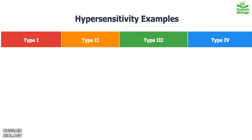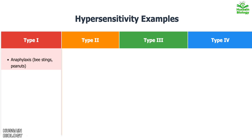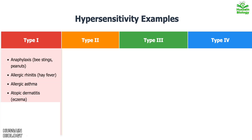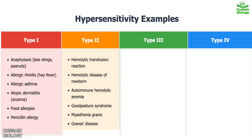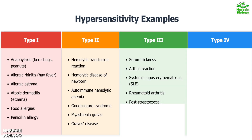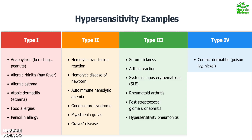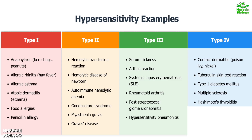Examples of all four hypersensitivity reactions: Type 1 includes anaphylaxis, atopic dermatitis, food allergies, and penicillin allergy. Type 2 includes hemolytic transfusion reactions and many more. Type 3 includes serum sickness and Arthus reaction. Type 4 includes contact dermatitis, tuberculin skin test, multiple sclerosis, and many more, as seen in the classification table.